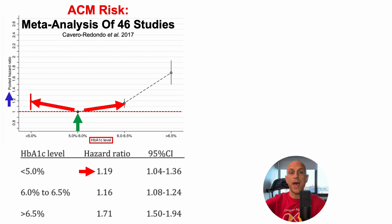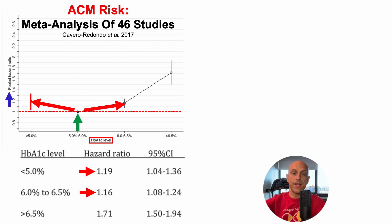Similarly, people who had HbA1c in the 6 to 6.5% range also had a significantly increased risk — 16% increased risk to be exact. The greatest risk was for people who had HbA1c greater than 6.5%, with a 71% increased all-cause mortality risk.